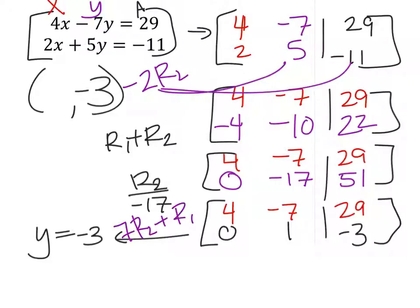I got 7 times row 2 plus row 1. So, what does that turn out to be? Well, 7 times the 0 plus the 4. That gives us the 4. 7 times the 1 plus the 7. That would give us the 0 that we wanted. 7 times the negative 3 plus 29. And that gives us 8.